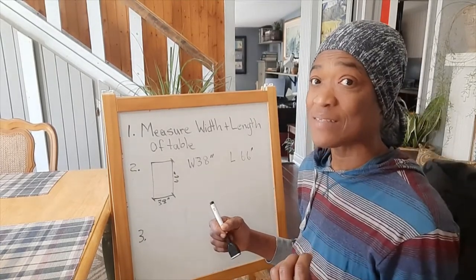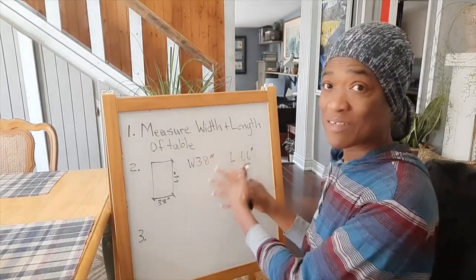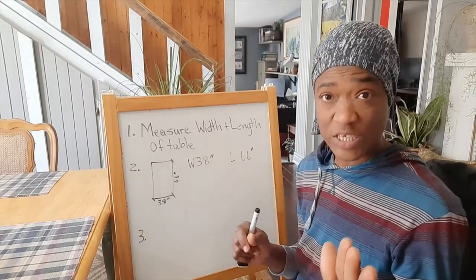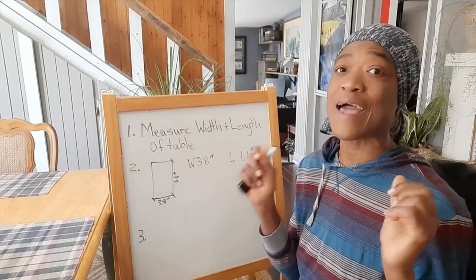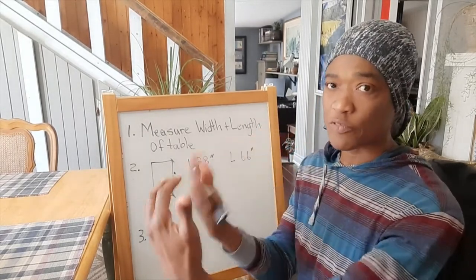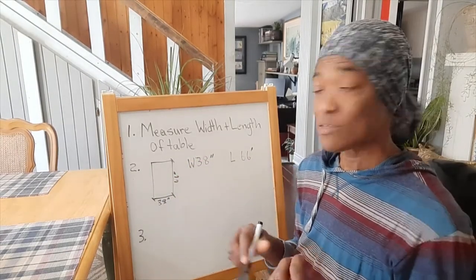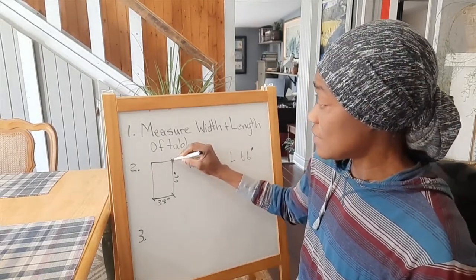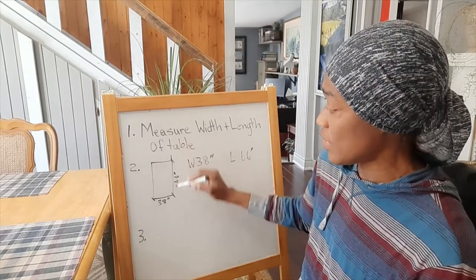The suggested increments are between 24 inches and 30 inches. I like to stick to 30 inches. That 30 inches needs to be added to both sides of the table—for the length, we add it on both ends, and for the width, we add 30 inches on both sides.